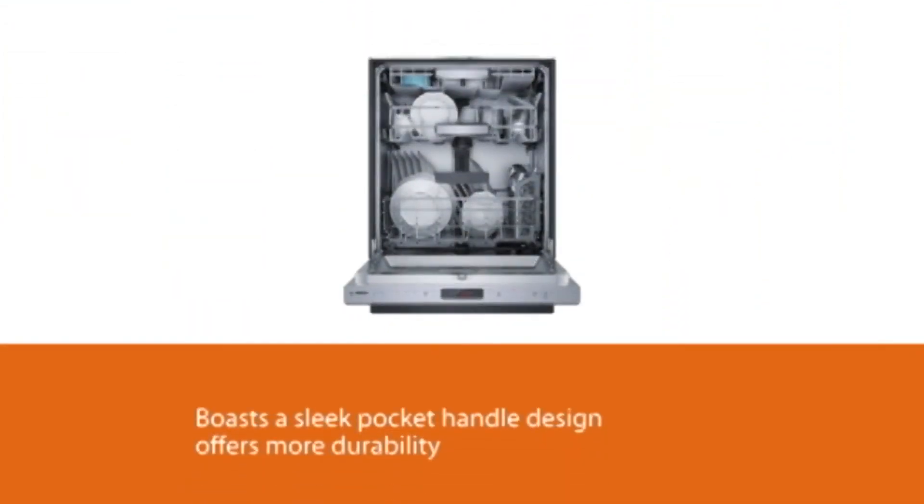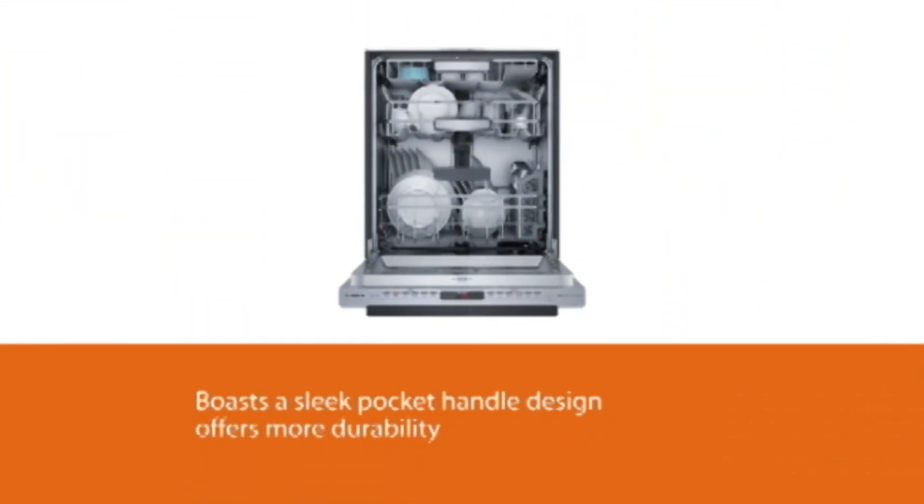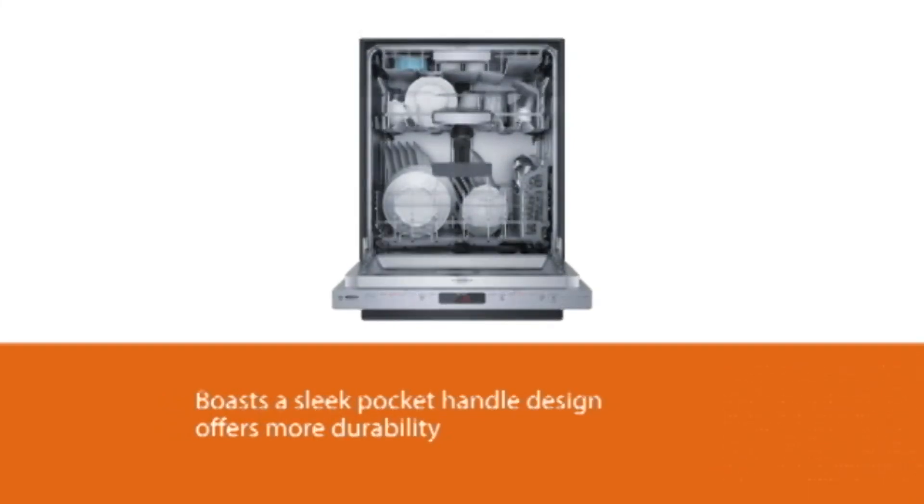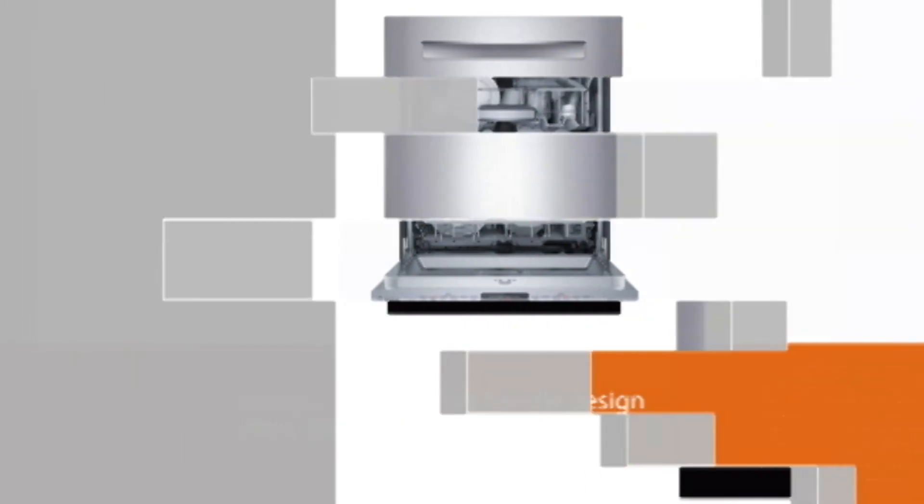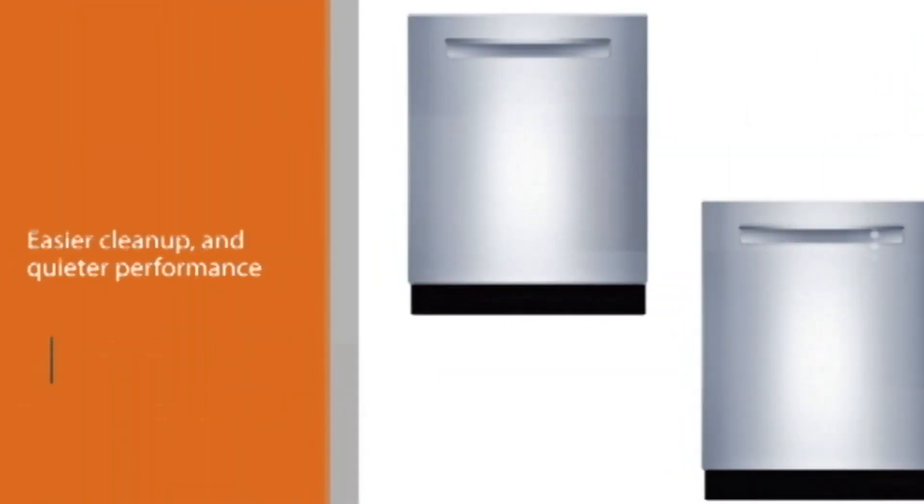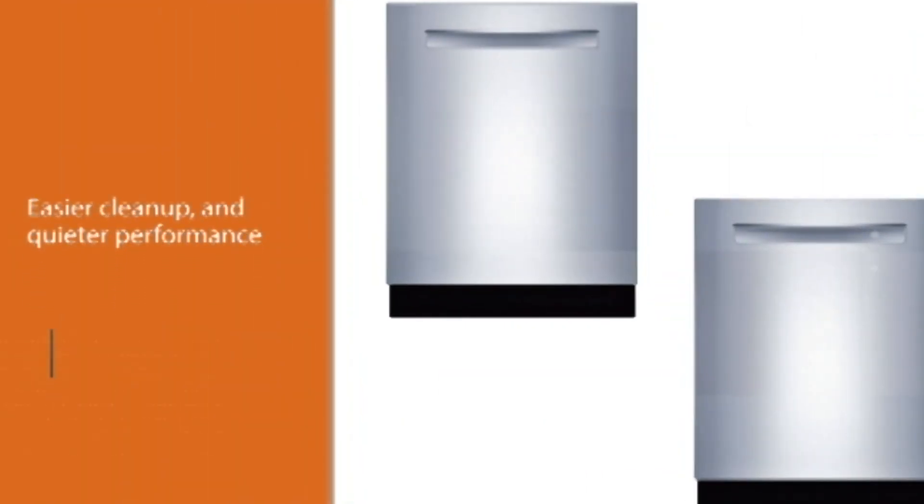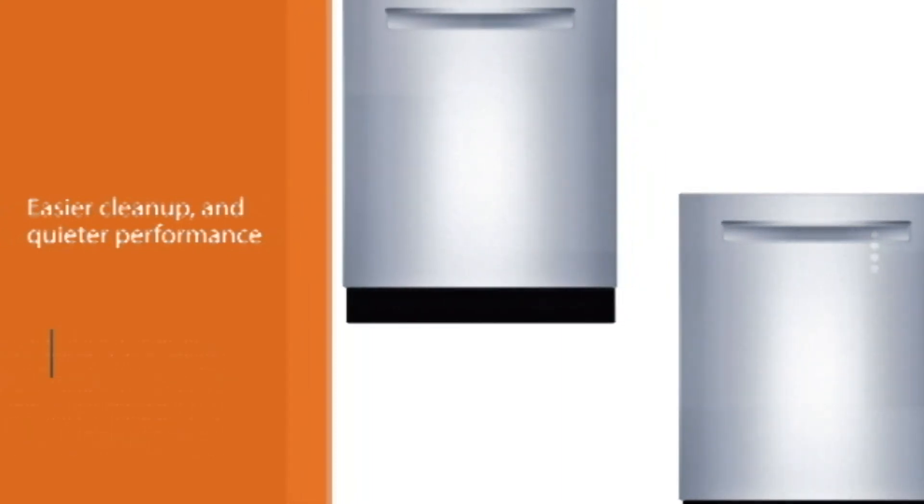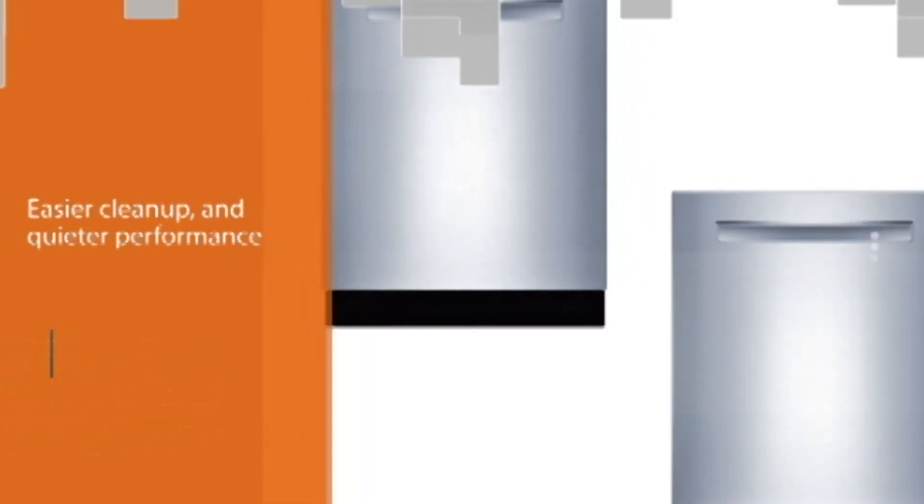The stainless steel tub offers more durability, easier cleanup, and quieter performance than models with plastic tubs. Another key feature of this unit is the V-shaped third rack, called the MyWay Rack. This special third rack offers to load flexibility. The six wash cycles and six options offer versatility for different dishwashing needs.